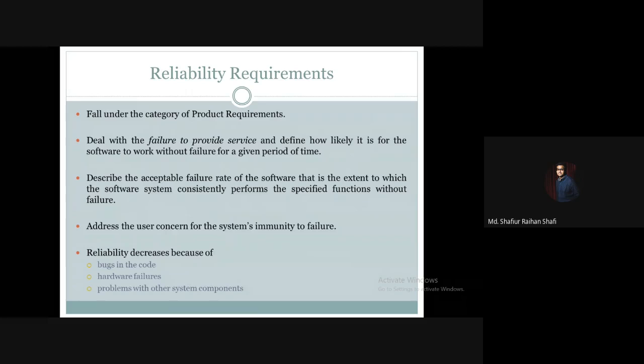Basically, reliability requirements define how much a system will be reliable to perform a particular task. That is, at a given time frame, how consistently it can perform without failure. It is likely to show failure at some point of its journey, so the acceptable failure rate must be defined in reliability requirements.